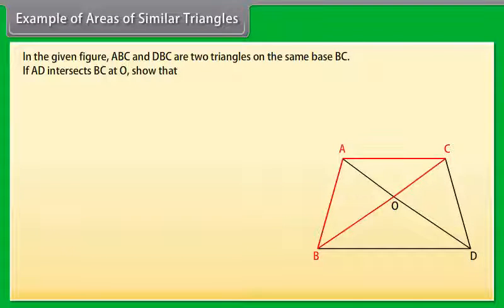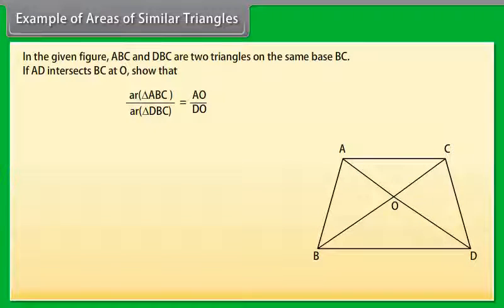In the given figure, ABC and DBC are two triangles on the same base BC. If AD intersects BC at O, show that area of triangle ABC upon area of triangle DBC equals AO upon DO.